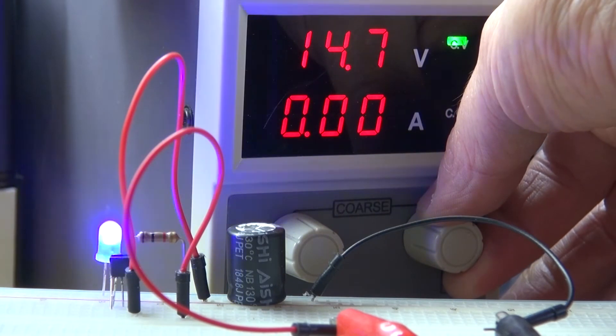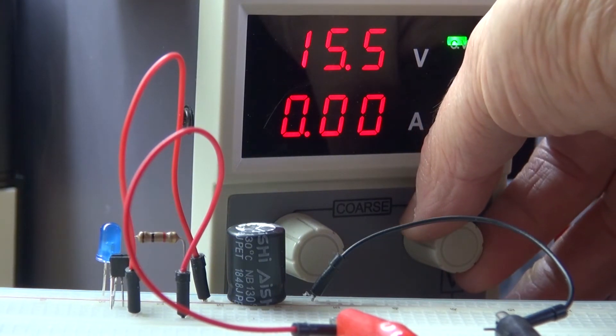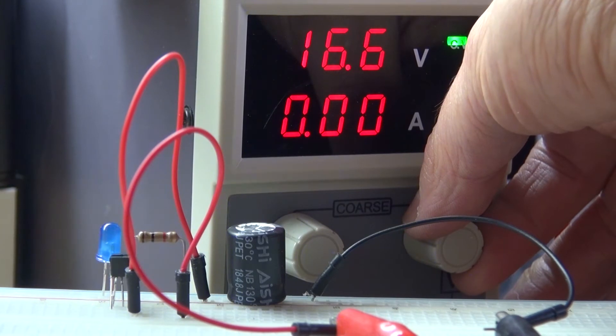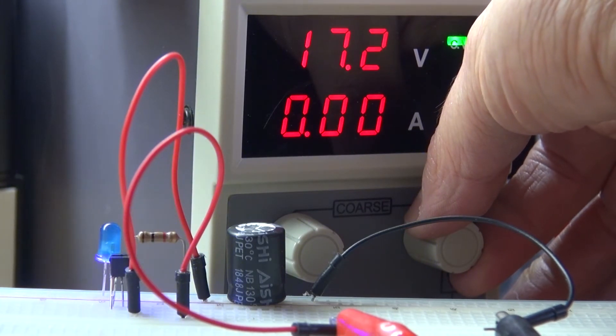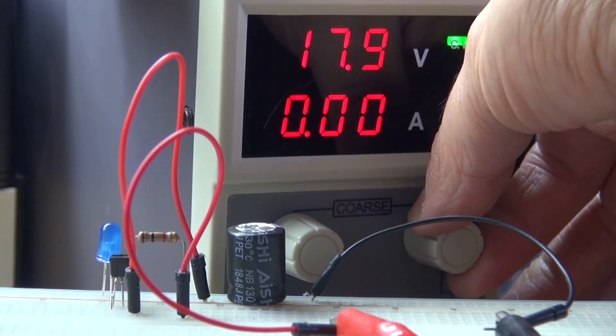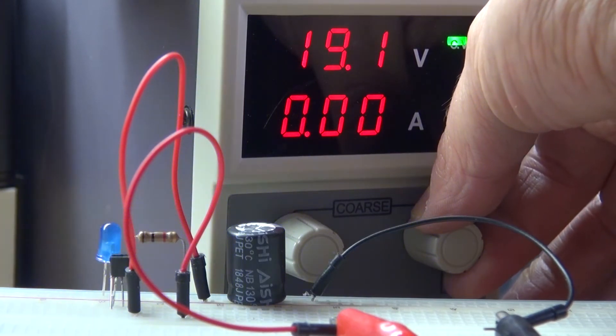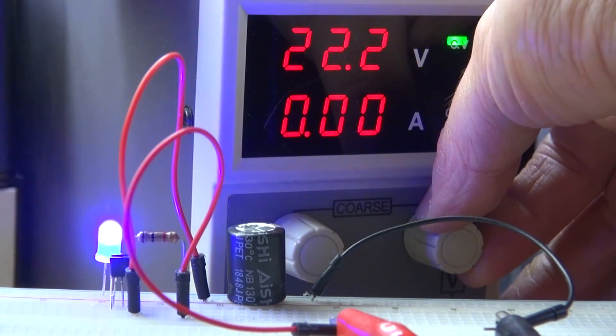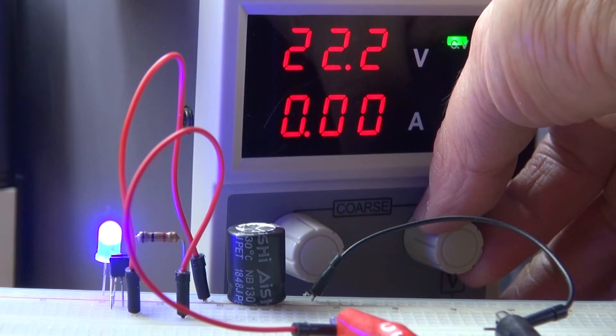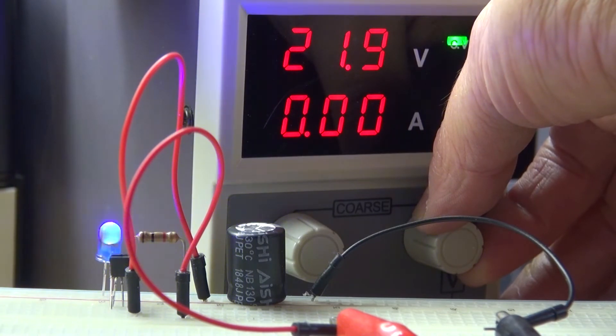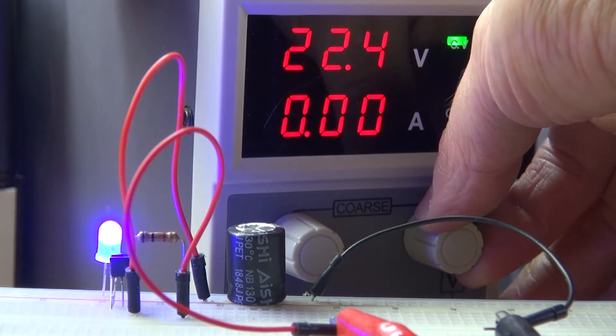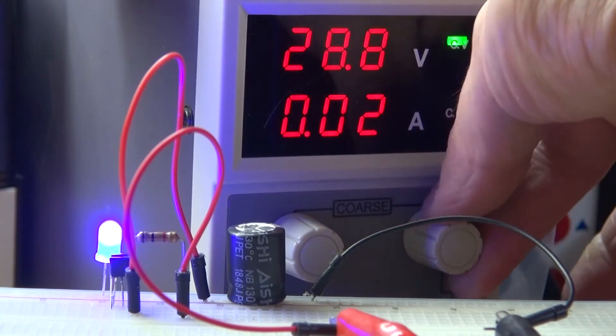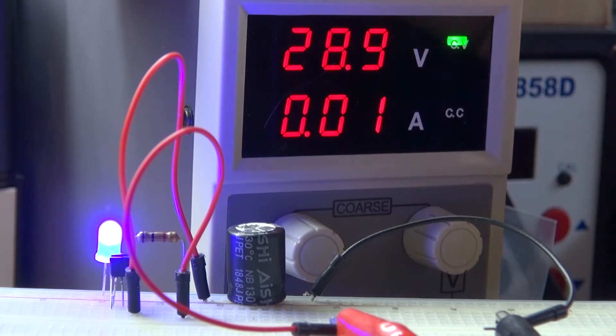Now watch as I crank it up more, the LED will flash faster. Continuing to flash. And as you can see, it's almost on a solid bright light. It seems like it stops at about 22.6 volts. And of course I can crank it all the way to 28 and it stays on still.